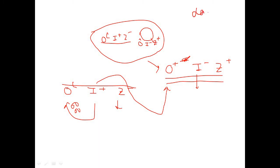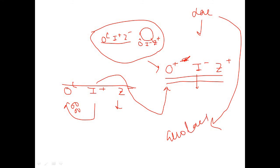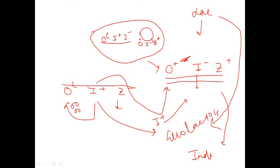Only when lactose is present can expression of beta-galactosidase be catalyzed in the merodiploid state. Lactose is taken inside, converted to allolactose, and this allolactose binds to the repressor coded by the I+ gene in the P1 genotype. As a result, the repressor cannot bind to the O+ operator, and expression of Z+ will occur. So the expression in the merodiploid is inducible.